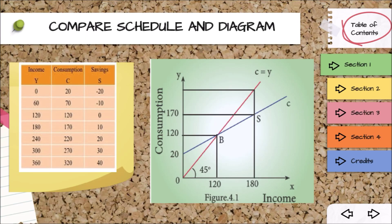In the diagram, income is measured horizontally on the X-axis and consumption is measured vertically on the Y-axis. The 45-degree line represents all levels where income and consumption are equal. This is a linear consumption function based on the assumption that consumption changes by the same amount as income. The consumption function measures not only the amount spent on consumption but also the amount saved, since the propensity to save is merely the propensity not to consume. The 45-degree line may be regarded as the zero-saving line, and the position of the CC curve indicates the division of income between consumption and saving.